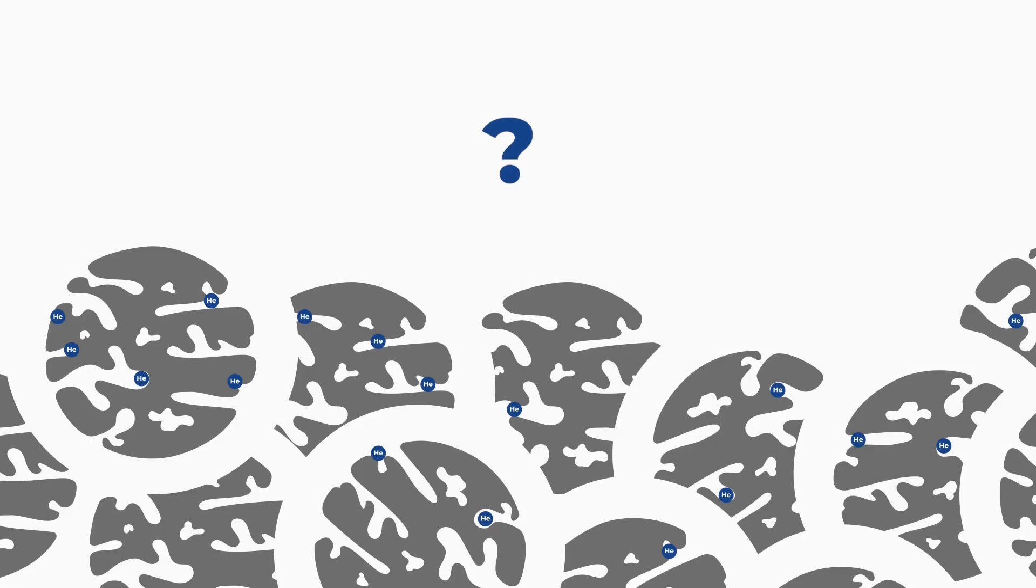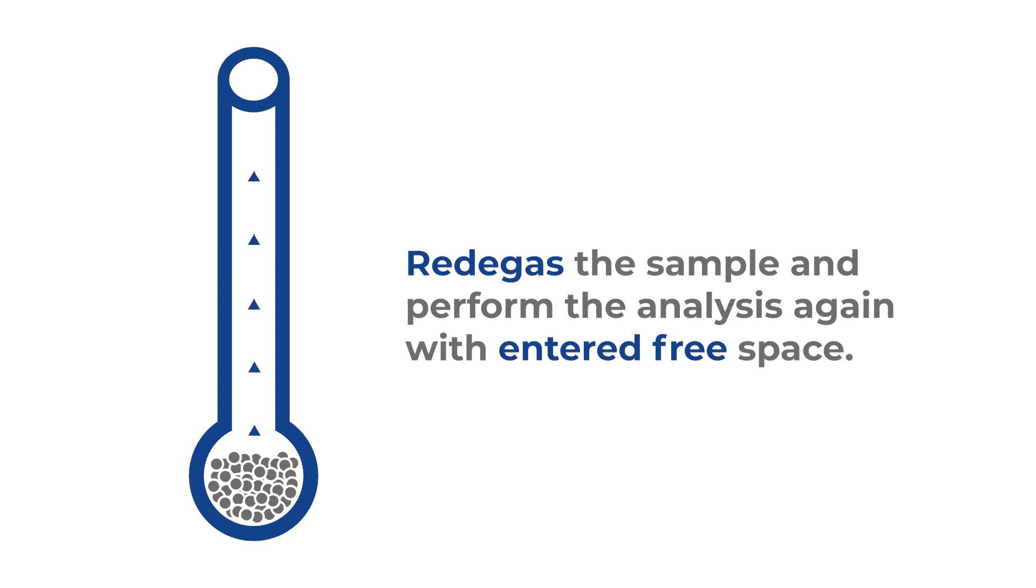If there is a suspicion that the sample is interacting with helium on a measured free space analysis, it is best to double-check with the following method. First, re-degas the sample and then perform the analysis again on the same sample tube with enter free space where the previously measured free space values are entered.